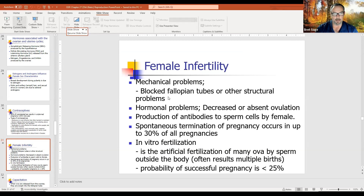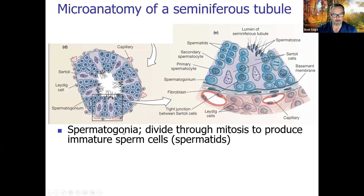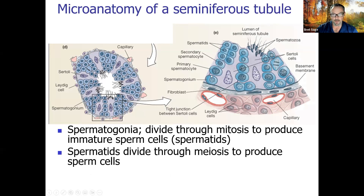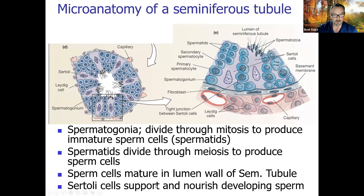Spermatogonia divide through mitosis to produce spermatids, then spermatids divide through meiosis to produce sperm cells — spermatozoa. Sertoli cells are supporting cells that support and nourish developing sperm. Sperm cells mature in the lumen wall of the seminiferous tubules.